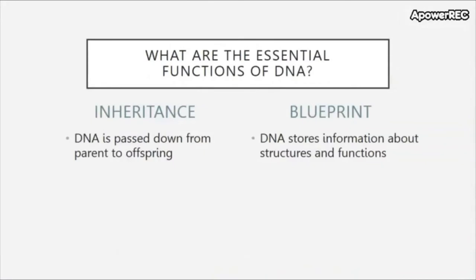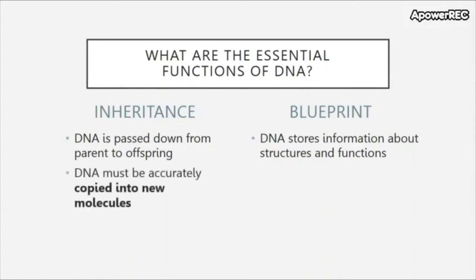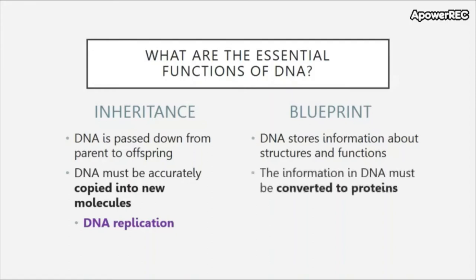What are the essential functions of DNA? DNA is important for inheritance — it is passed down from parent to offspring, and in order to do so it must be accurately copied into new molecules. This is called DNA replication. DNA also serves as a blueprint: it stores information about the structures and functions of the cell. The information in DNA must be converted into proteins through processes called transcription and translation.